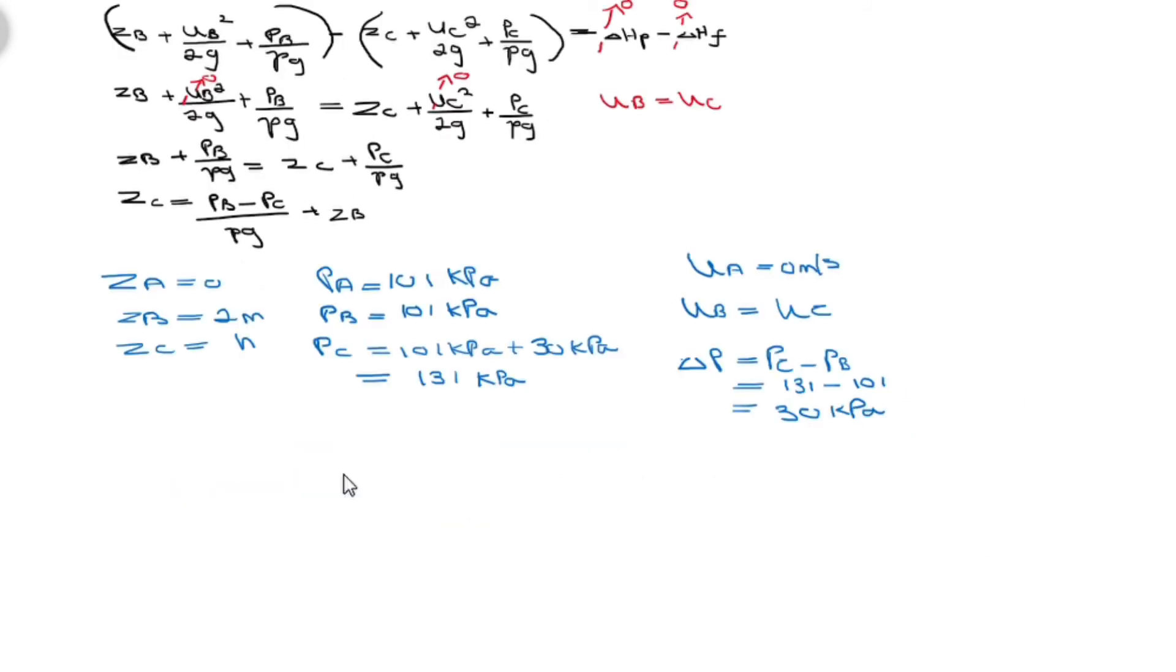We can go back to our equation now that we have most of our unknowns which we derived to pressure at point B subtracting pressure at point C over density gravitational force plus height at point B.